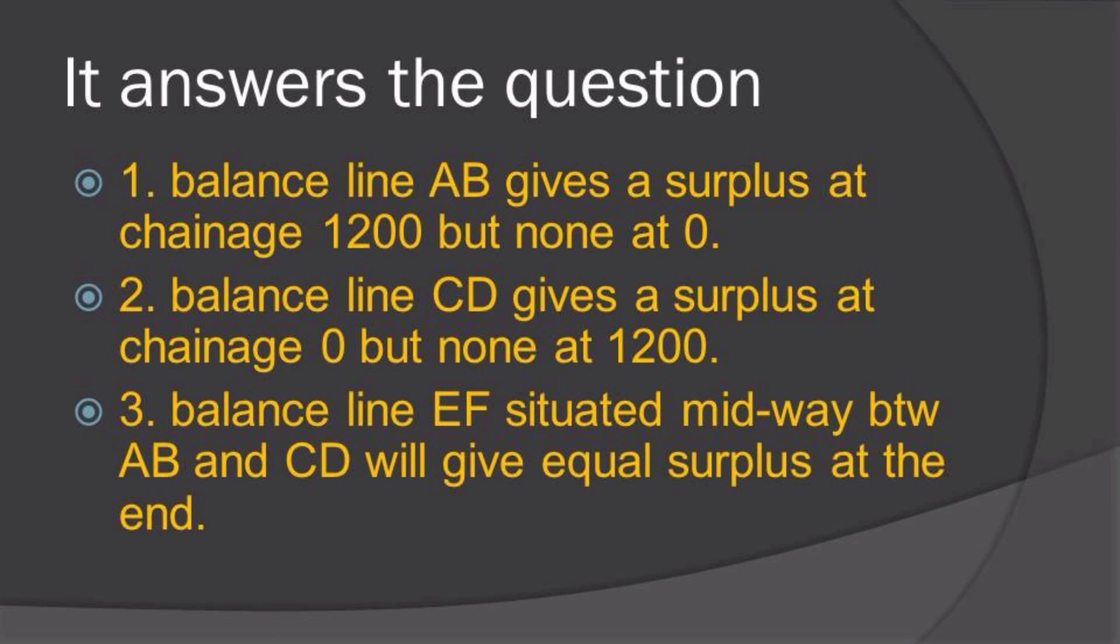In summary, the balance line AB gives us a surplus at chainage 1200 but none at 0. Two, the balance line CD gives us a surplus at chainage 0 but none at 1200. Three, the balance line EF situated midway between AB and CD will give us equal surplus at the end.